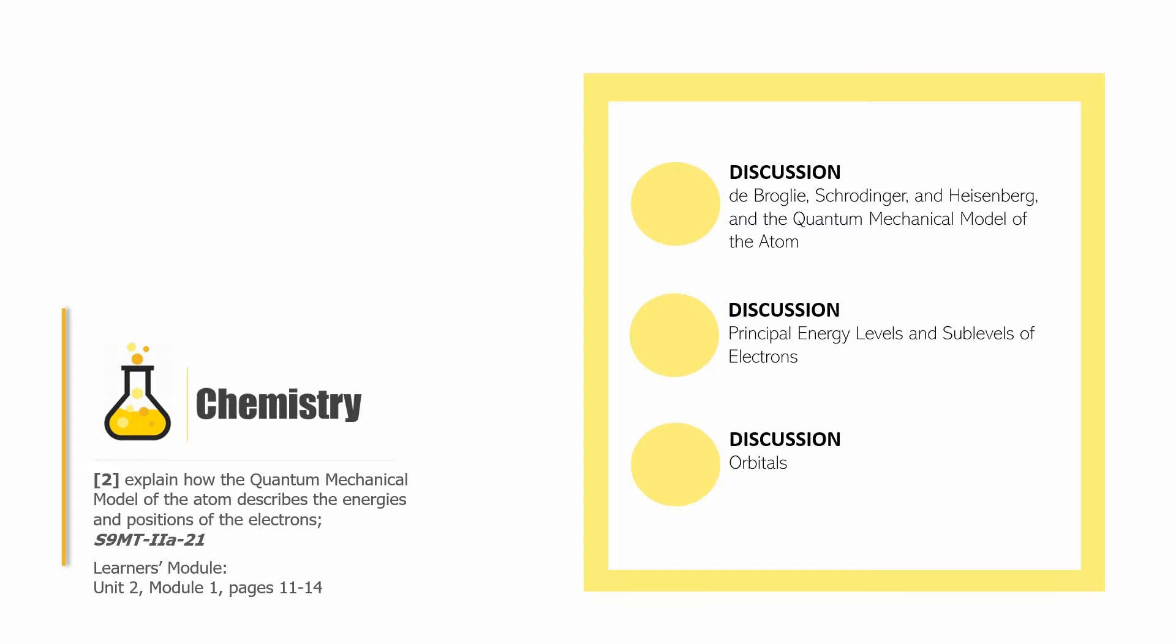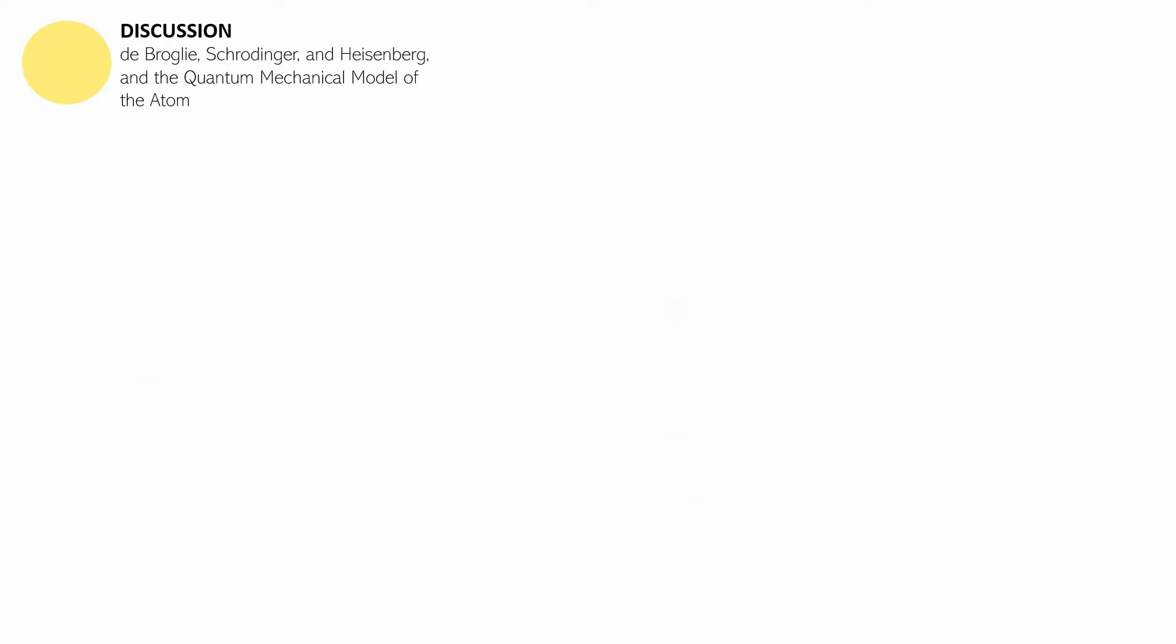We begin this discussion by pointing out that the atomic model that was proposed by Niels Bohr is not accepted. It's generally unacceptable because of the impossibility to find an electron in a specific orbit around the nucleus. So this model is not going to work. It's not going to be able to explain how an atom works, how it behaves, how electrons behave.